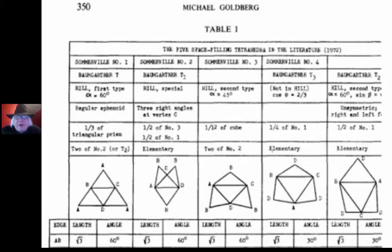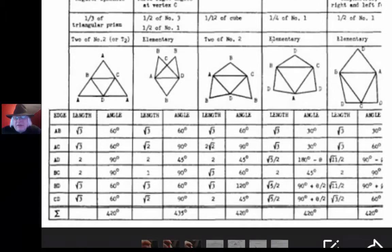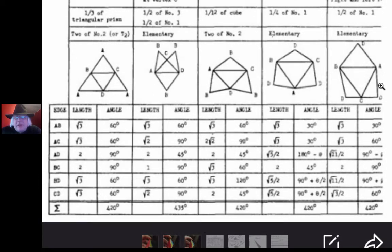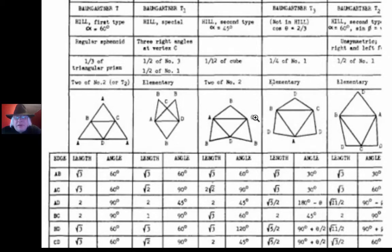And that's what we have here in this 1972 'Five Space-Filling Tetrahedra in the Literature' Table 1, by Michael Goldberg. He's a mathematician, and he's doing a fantastic job of summarizing what's known up till his time in 1972, and then he's going to value add. So he's learning and he's teaching, and he's teaching teachers. He's teaching teachers about what we call plane nets — it's got a tabular shorthand for mapping angles and lengths to these various diagrams. You fold them up into tetrahedra.